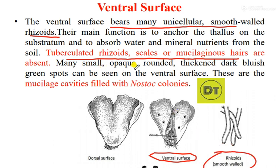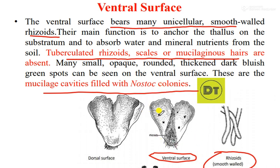Many small, opaque, rounded, thick, and dark bluish-green spots can be seen on the ventral surface, which are mucilaginous cavities filled with Nostoc colonies. These spots on the ventral surface are dark bluish-green in color. Nostoc is a type of blue-green algae.